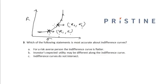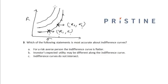Both points represent the same utility function for the investor. A particular characteristic of the indifference curve is that they do not intersect with each other — the indifference curves are parallel to each other. Let us look at the first option.